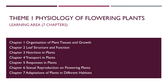Biology Form 5 for KSSM consists of 13 chapters and 5 themes, and semuanya adalah berkaitan dengan tumbuhan — all the chapters. So in Chapter 1, the Physiology of Flowering Plants comprises 7 chapters. So the first one, we're going to look at Organisation of Plant Tissues and Growth.